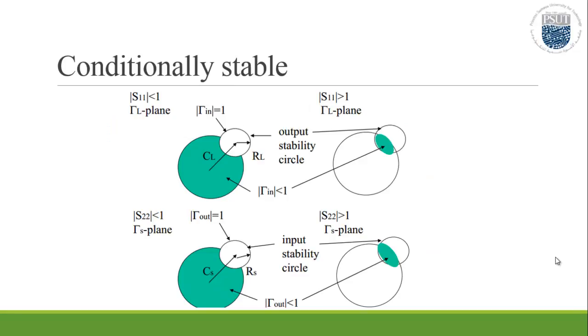While in the conditionally stable, k must be less than 1, and delta must be less than 1 as well. This represents the conditionally stable circle, which, as shown in the figure, an intersection has occurred between the Smith chart and the circle.